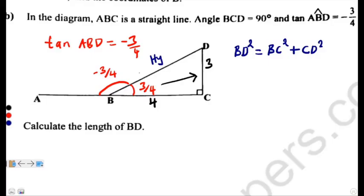So, from here, we are going to say BD squared is equal to BC is 4 squared plus CD is 3 squared. So, from here, we are going to say BD squared is equal to 4 squared is 16 plus 3 squared is 9.